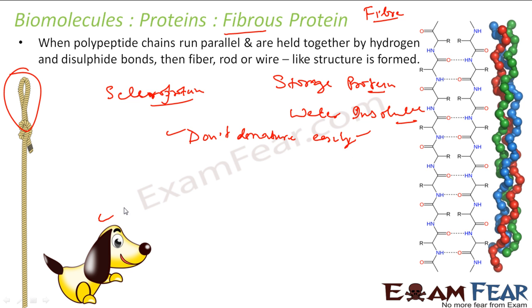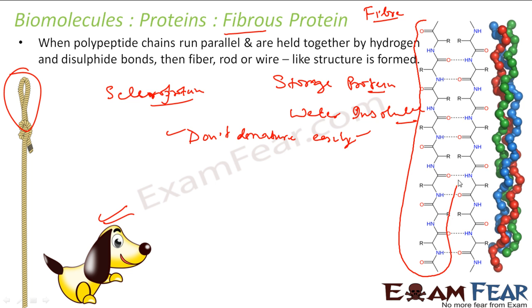Fibrous proteins are found only in animals and they are used to form connective tissues, tendons, bone matter, etc. For example, keratin in the hair and collagen are examples of fibrous proteins. They have very little or almost no tertiary structure — only primary and secondary structure. They have long parallel polypeptide chains, and cross-linkage at intervals forms long fibers or sheets.